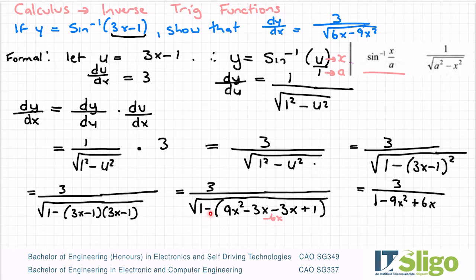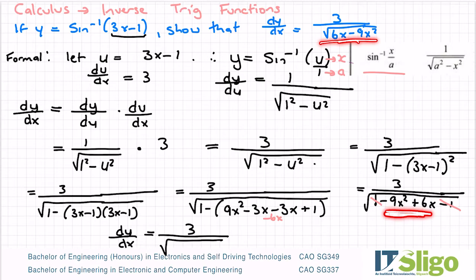And then I have minus by plus 1 is minus 1. So what happens then is the 1 and the minus 1 cancel. And you're left with dy/dx being equal to 3 on the top over the square root of, and all they've done here is literally swap the order of these, so it's 6x minus 9x squared.